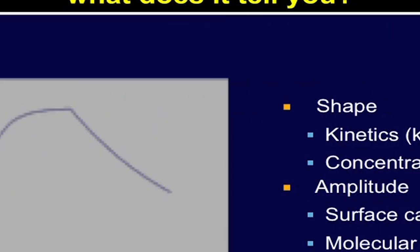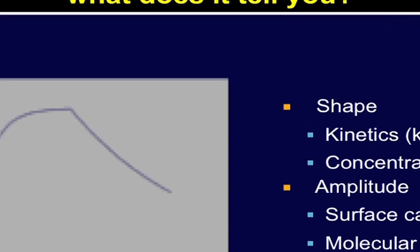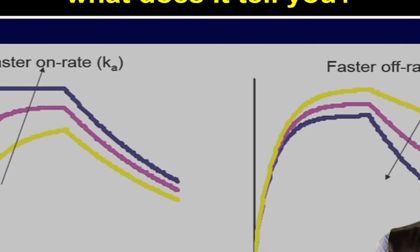The curves, shapes, and amplitude of binding measurements can be used to determine the kinetics of interaction and concentration analysis. The analysis of the SPR sensogram can answer many questions regarding specificity, affinity, kinetics, concentration, and thermodynamics. The shape and amplitude provide various information by looking at the SPR sensogram curves. The on-rate and off-rate can indicate whether binding is slow or fast. In addition, comparisons of various analytes can be made simultaneously for their association and dissociation rates by looking at these SPR sensograms.